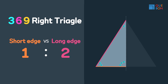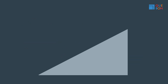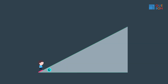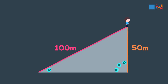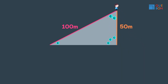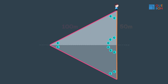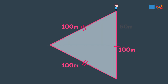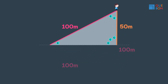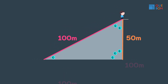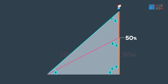To review: we create a 30-60-90 right triangle by folding an equilateral triangle. The ratio of the short edge to the long edge is 1 to 2. For example, walking along a 30-degree incline of 100 meters is equivalent to going up 50 meters — because it's half the length.